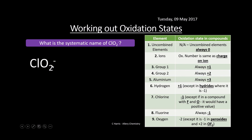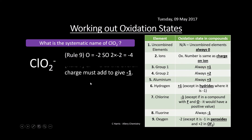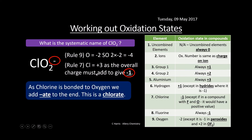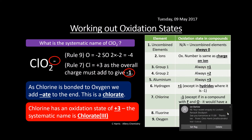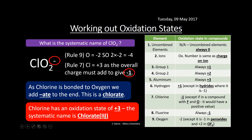Looking at systematic naming using ClO₂⁻ as an example. Oxygen is −2 and there are two, giving −4 total. The overall charge is −1, so chlorine must be +3. When chlorine is bonded to oxygen, we add '-ate' to the end, giving 'chlorate.' Since chlorine has a +3 oxidation state, the systematic name is chlorate(III) — the Roman numeral III indicates the +3 charge and '-ate' tells us chlorine is bonded to oxygen.